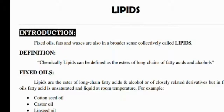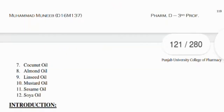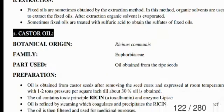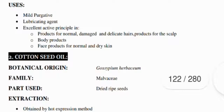Fixed oils include castor oil, cotton seed oil, sunflower oil, corn oil, and many other things. The first one is castor oil; its botanical origin is Ricinus communis, its family is Euphorbiaceae, and the part used is the oil obtained from the ripe seeds. It is used as a mild purgative, lubricating agent, and for body care products.